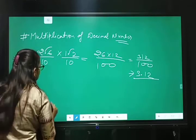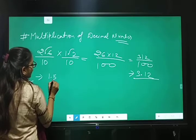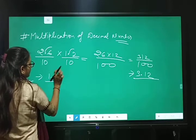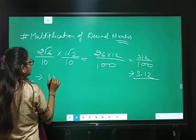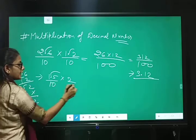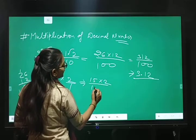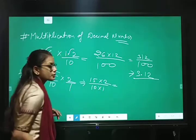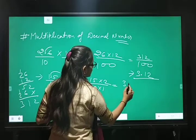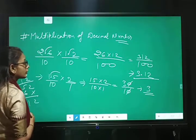So, answer is 3.12. One more example is 1.5 multiply by 2. So, point ko remove karengi to 10. 15 multiply by 2 upon 10 multiply by 1. 15 to za 30 upon 10. 0 se 0 cancel out. So, answer is 3. Okay?